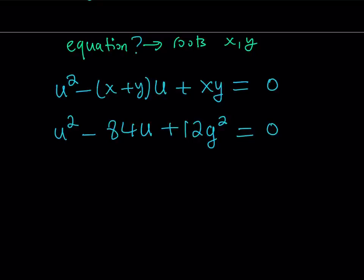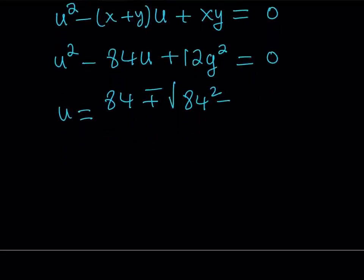I can replace x plus y with 84. So it's going to give me u squared minus 84u plus xy. I don't know the numerical value of xy, but at least I have something. I can replace xy with 12g squared. And the whole thing equals zero. So this is my quadratic whose roots are x and y. Since it's a quadratic, it's either factorable or we're going to use the quadratic formula. In this case, it doesn't seem factorable because of the g. I'm going to use the formula. So u equals negative b, which is 84, plus minus the square root of b squared.